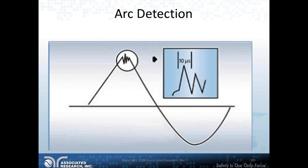High-impedance arcs and corona generate high-frequency pulses that ride on the low-frequency test current waveform. These pulses may have a frequency ranging from less than 30 kilohertz to more than 1 megahertz and can be very short in duration — often less than 10 microseconds — which is why arcing is called a momentary discharge.